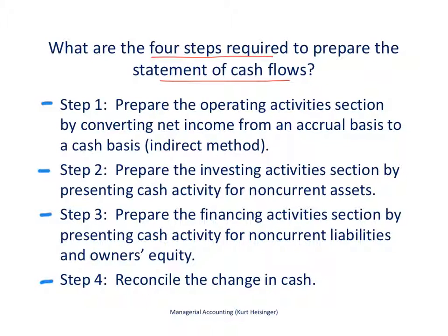The first step is to prepare the operating activity section of the statement of cash flows. This is always the first section that appears in the statement of cash flows. The indirect method, which is described in much more detail in a separate lecture, is the most popular by far. There are two different ways to prepare this section, and this is done by converting net income from an accrual basis to a cash basis.